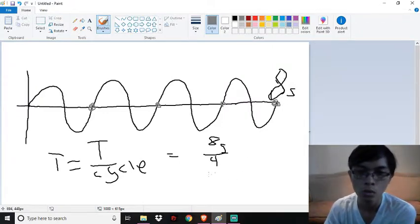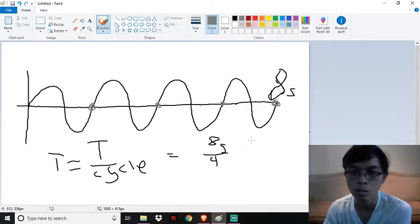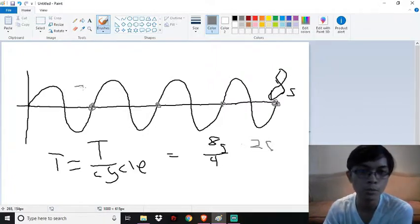So 8 seconds divided by 4, that would be 2 seconds. So we have 2 seconds per cycle here.